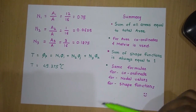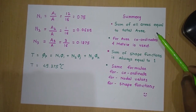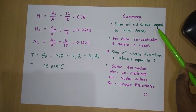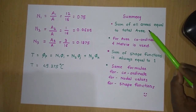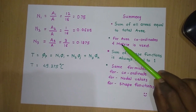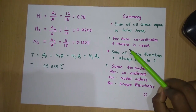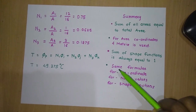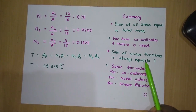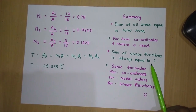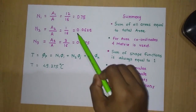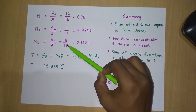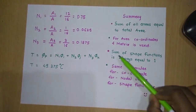To summarize: first check — the sum of all sub-areas A1 + A2 + A3 must equal the total area A, confirming your calculation. For computing area, use coordinates in the matrix formula. Second check — the sum of all shape functions N1 + N2 + N3 must always equal 1. Here, (12 + 1 + 3)/16 = 16/16 = 1, which is verified.